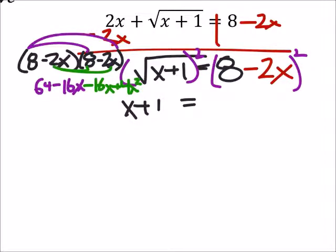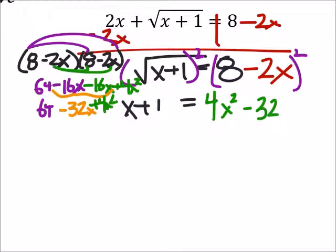And if I combine my like terms here, I've got 64, and then we've got this 2 negative 16x, which would be negative 32x. And then I would have the plus 4x squared. Now I would rearrange this, so that's why I'm going to write it over here. So that I have ax squared plus bx and then plus the c.